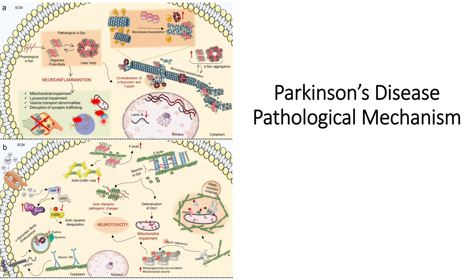Microtubule destabilization can occur through post-translational modifications such as deacetylation, or disruptions in tyrosination. For example, the gene SIRT2 can cause microtubule destabilization. People have also found that using a chemical inhibitor for SIRT2, microtubule stabilization is increased and cellular homeostasis is also improved.